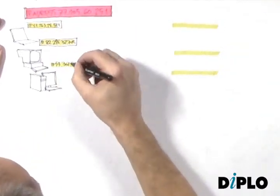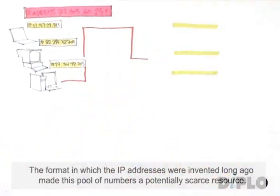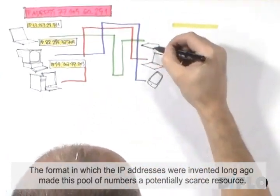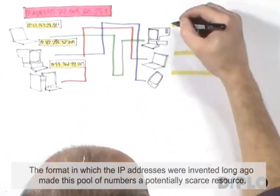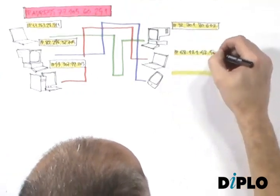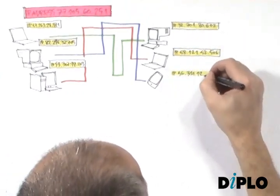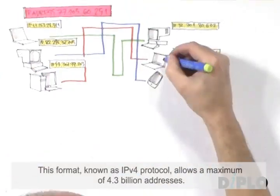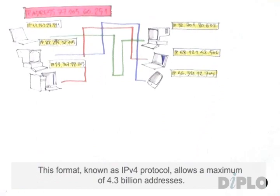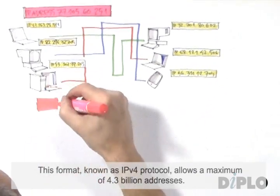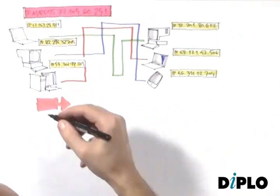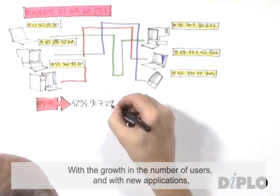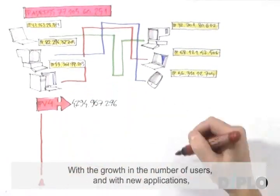The format in which the IP addresses were invented long ago made this pool of numbers a potentially scarce resource. This format, known as IPv4 protocol, allows a maximum of 4.3 billion addresses.